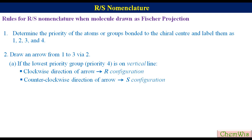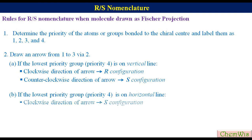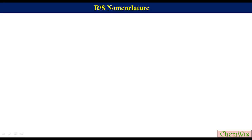While a counterclockwise direction of arrow suggests S configuration. If the lowest priority group is on the horizontal line, then a clockwise direction of arrow suggests S configuration, while a counterclockwise direction of arrow suggests R configuration. Now let's do some exercises for more clarification.